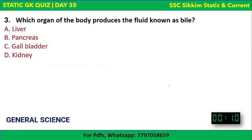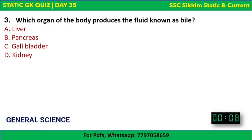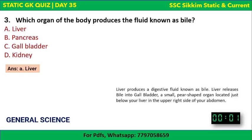Next question: which organ of the body produces the fluid known as bile? Options: liver, pancreas, gallbladder, or kidney. The correct answer is liver. The liver produces a digestive fluid known as bile and releases it into the gallbladder, which is a small pear-shaped organ located just below the liver in the upper right side of the abdomen.